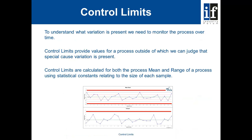To understand what variation is present, we need to monitor the process over time. Control limits provide values outside of which we can judge that special cause variation is present. Control limits are calculated for both the process mean and the range of a process using statistical constants relating to the size of each sample. The upper and lower control limits are shown on the X bar chart, and a control limit for the range is shown on the bottom chart. Any values outside these control limits would indicate a problem with the process and its performance.